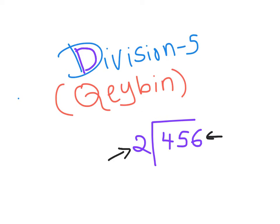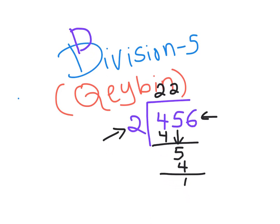Now look here — we have 4. 4 into 4 gives us 2, then 2. Bring down. Now 5 — 5 into 5, bring down 2. Then 4 again — 4 into 4, that gives us 1. And we have a remainder of 1.